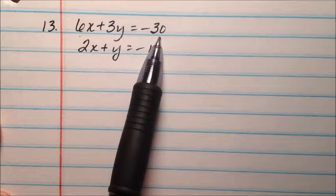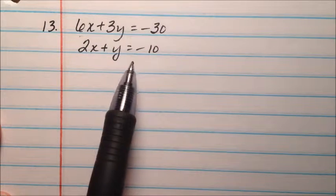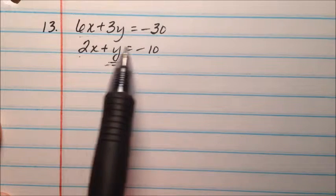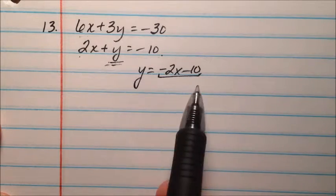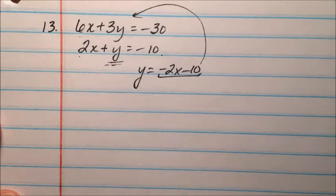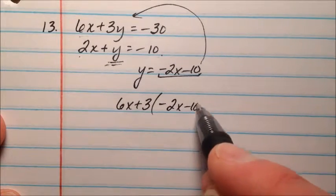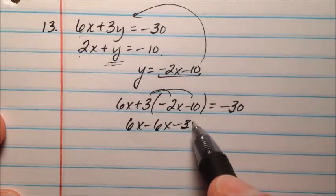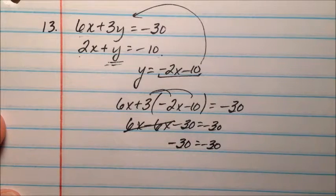Number 13 has 6x plus 3y equals negative 30, and 2x plus y equals negative 10. We don't have a variable already solved for, but we can subtract 2x from both sides of the second equation to get y equals negative 2x minus 10. Substituting that into the first equation gives 6x plus 3 times the quantity negative 2x minus 10 equals negative 30, which distributes to 6x minus 6x minus 30 equals negative 30. The x terms cancel, leaving negative 30 equals negative 30, which is a true statement.